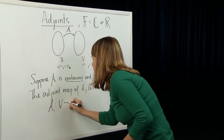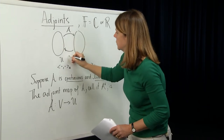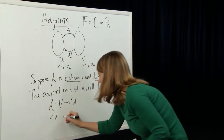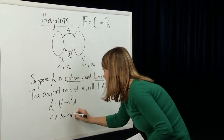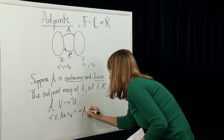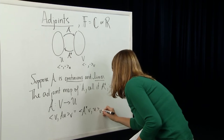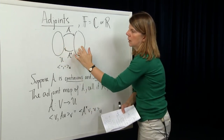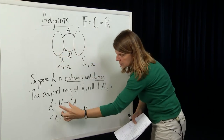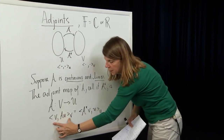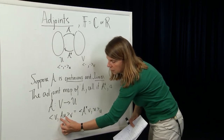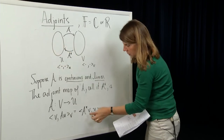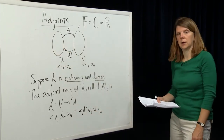Then the adjoint of A, which we call A*, maps V back to U. A* is defined simply in terms of the corresponding inner products on U and V: the inner product in V of v with Au equals the inner product in U of A*v with u. So the adjoint map A* goes from the co-domain of A back to the domain of A, and is defined through this inner product relationship.